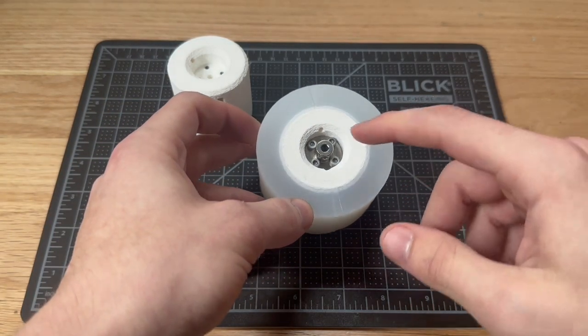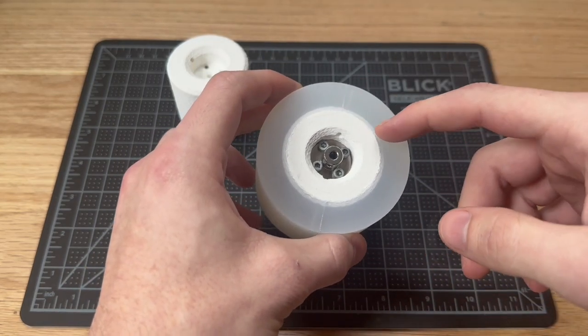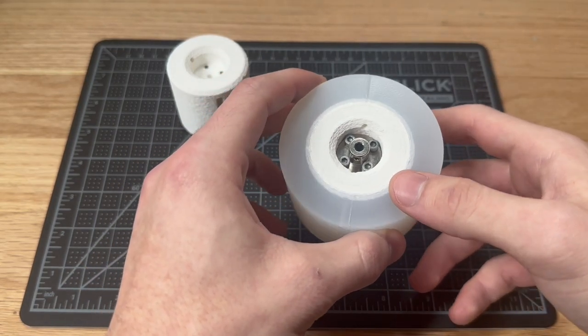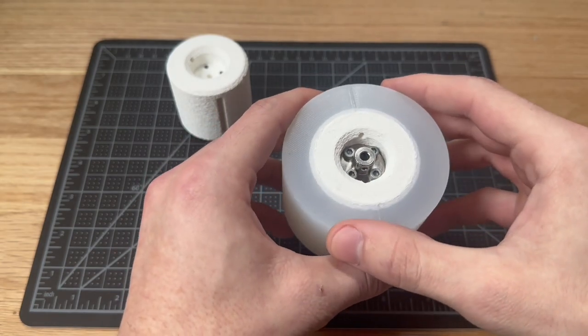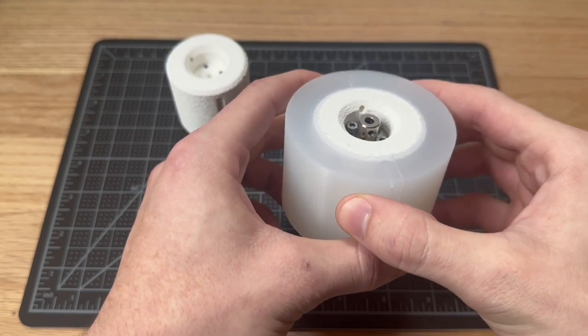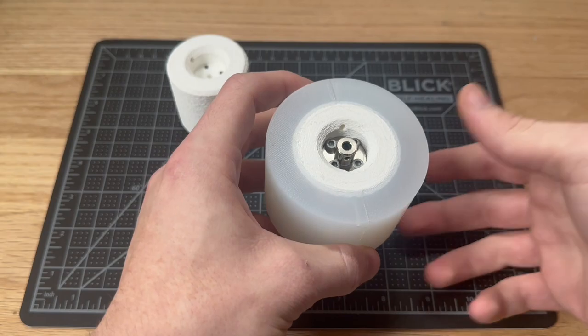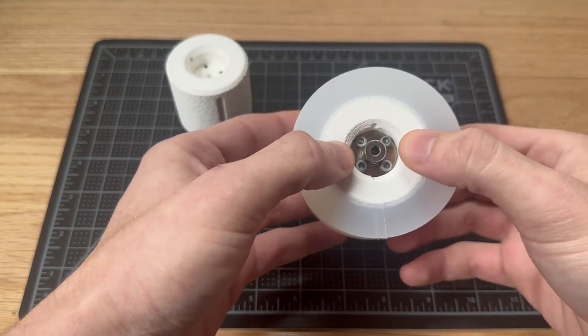The wheel consists of a hard 3D printed plastic inner core and a cast outer silicone section. The challenge with working with silicone is that it does not stick to anything besides itself, so we had to come up with a creative solution in order to get this outer silicone structure to adhere or stick to this inner core.